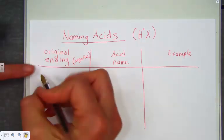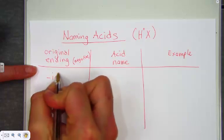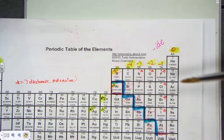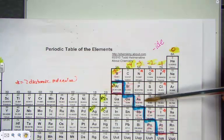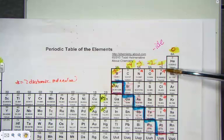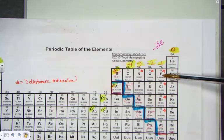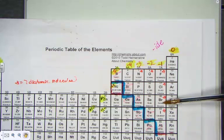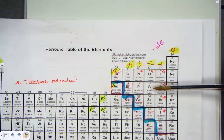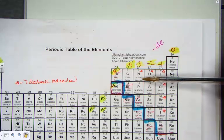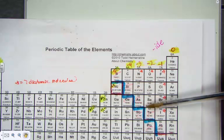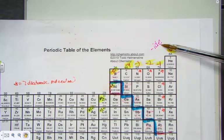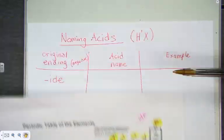Let's suppose we have an original ending, -ide. Now let me show where those come from. -ide come from these monoatomic ions on the front of our periodic table. Fluoride, F-1. Chloride, Cl-1. Bromide, Br-1. Oxide, sulfide, nitride. Hear how if they are monoatomic negative ions, they end with -ide. Sometimes the original ending is -ide.